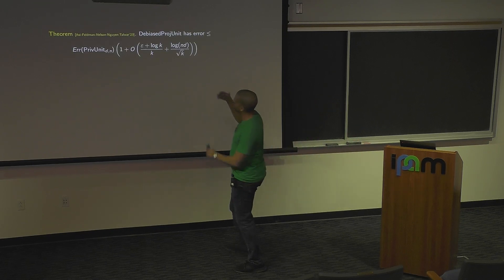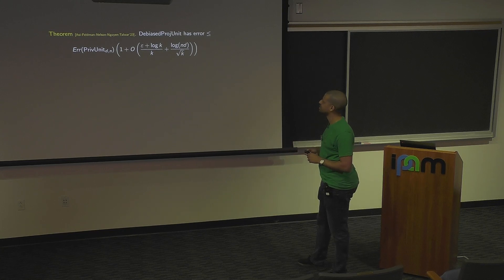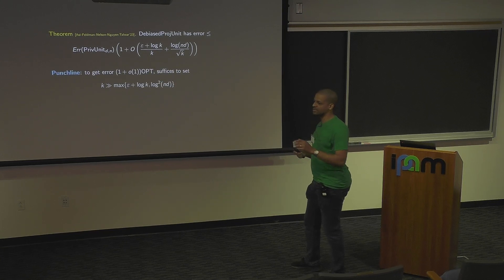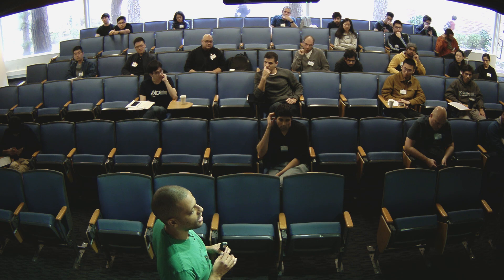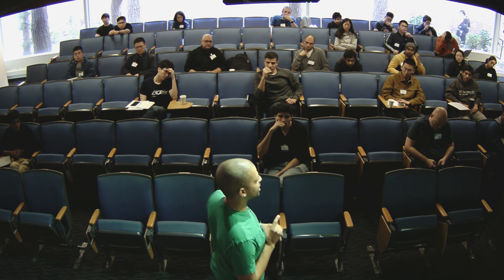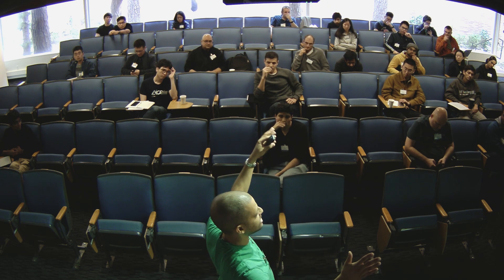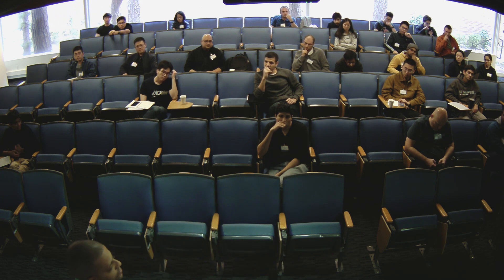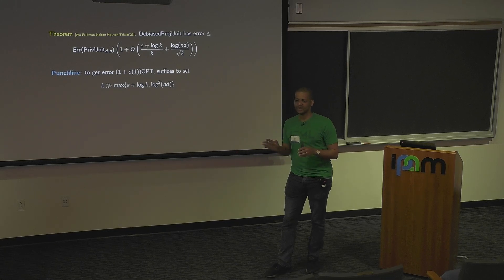The theorem is that ProjUnit has error at most the PrivUnit error in d dimensions times 1 plus a little-o of 1 term, plus an additive term that can be eliminated with a variant of the algorithm. The best approach is for everyone to use the same JL matrix: the server picks the JL matrix (or its pseudorandom seed), sends it to all users, and everyone uses it. That's essentially the whole algorithm.